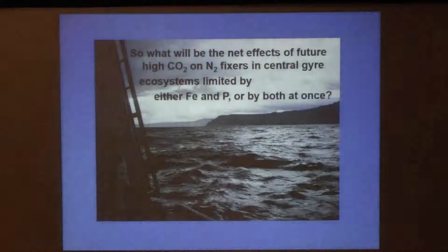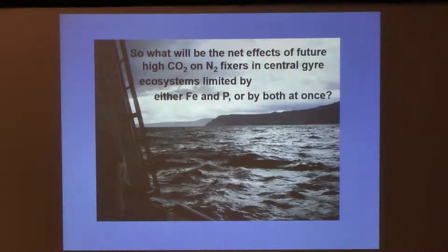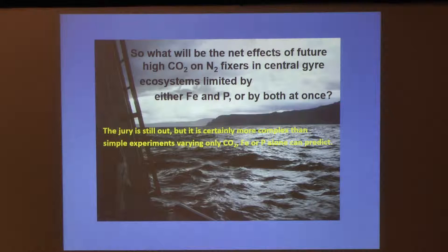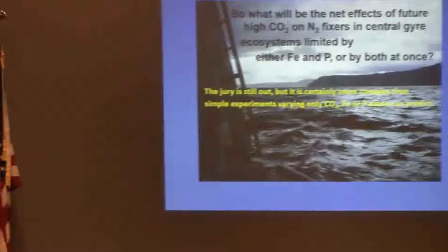Just to wind up: what are the net effects going to be when you put high CO2 moving into the ocean into ecosystems that are already limited by iron and/or phosphorus? Well, I don't claim to know the answer to that, but it's not simple. Simple Liebig-type experiments looking at limitation of one thing at a time are not giving us the right answer. There are unique responses of these organisms to combinations of factors that differ a lot from the responses to each factor individually. Iron limitation and phosphorus limitation each have a unique way of interacting with these high CO2 adapted cell lines, and iron and phosphorus together elicit another completely different set of responses.